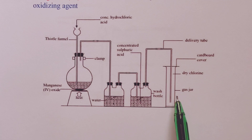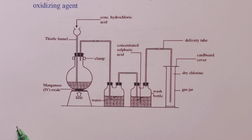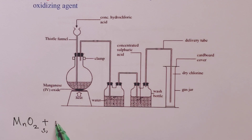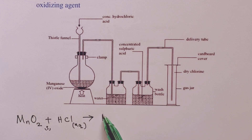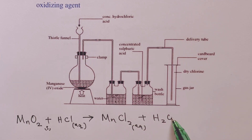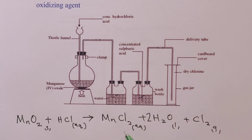Chlorine is denser than air. For the equation of the reaction taking place in the flask, manganese(IV) oxide reacts with concentrated hydrochloric acid — the state is aqueous since it is impossible to obtain 100% hydrochloric acid. The products are manganese(II) chloride (aqueous), water, and chlorine gas. The equation is balanced with a two on water and a four on hydrochloric acid.